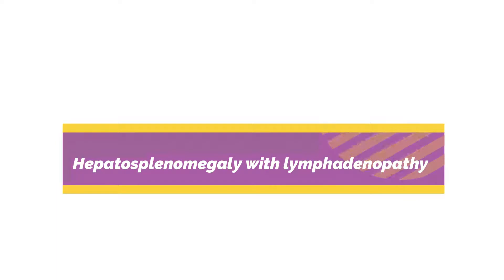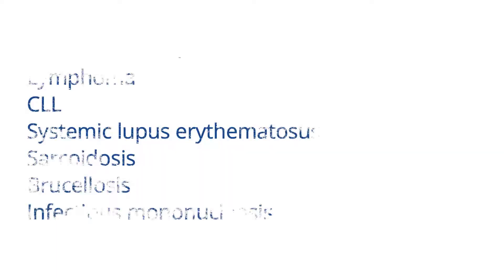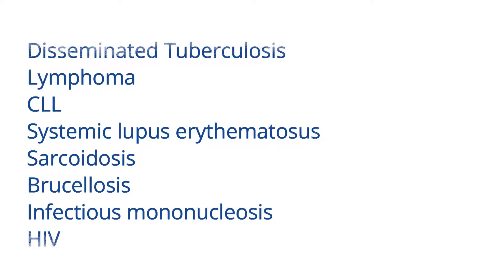Hepatosplenomegaly with lymphadenopathy: causes include disseminated tuberculosis, lymphoma, CLL, systemic lupus erythematosus, sarcoidosis, brucellosis, infectious mononucleosis, and human immunodeficiency syndrome (HIV/AIDS).